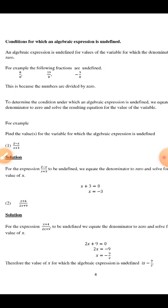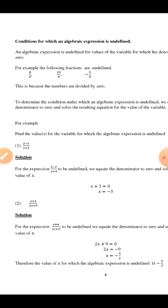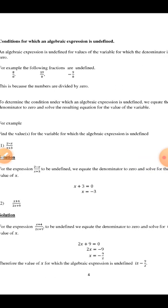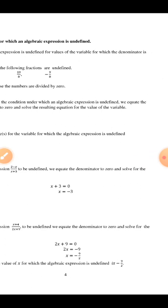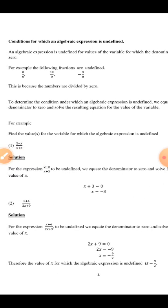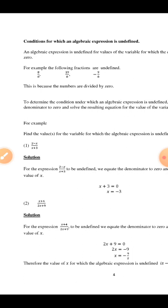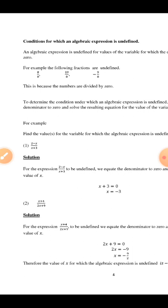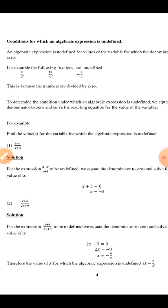Find the values of the variable for which the algebraic expression is undefined. For the expression two minus x, all over x plus three, to be undefined we equate the denominator to zero and solve for the value of x.